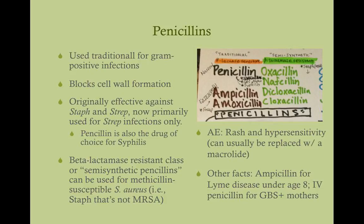The traditional penicillins — penicillin, ampicillin, amoxicillin — are primarily used for strep infections only. An exception would be syphilis: the drug of choice is penicillin. Another instance is group B strep prophylaxis in pregnancy — if a woman has group B strep on her cervix or in her vagina, you put her on penicillin prophylaxis to prevent transmission to the baby, because that can cause meningitis. Amoxicillin is commonly used in ear infections in children and in strep throat.